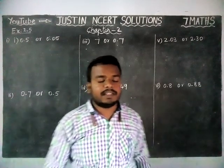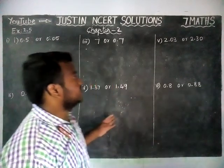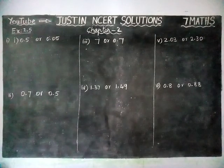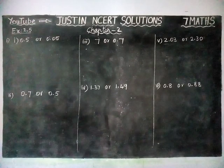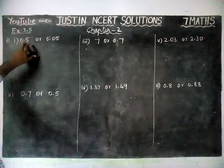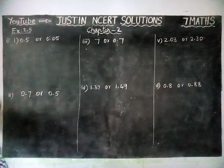Here, they have given decimals. We have to find which decimal is greater. To find that, first we have to see the place value of the given decimal.